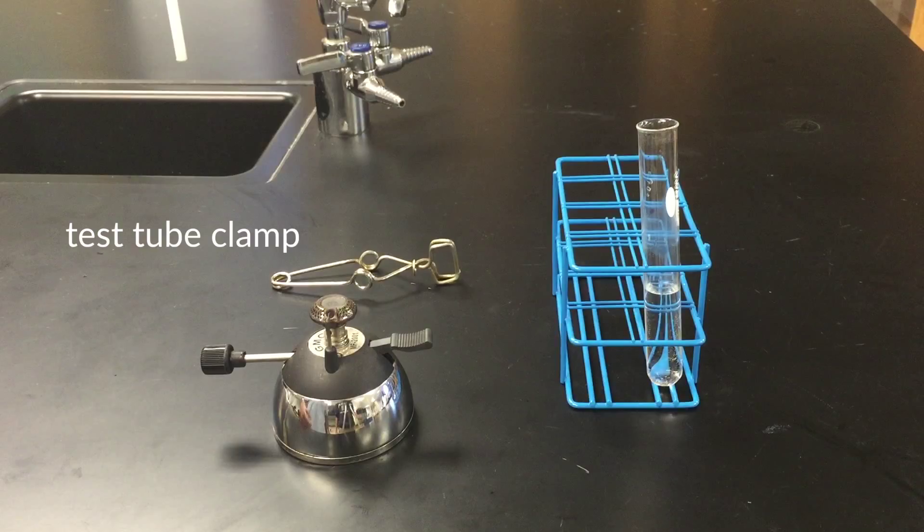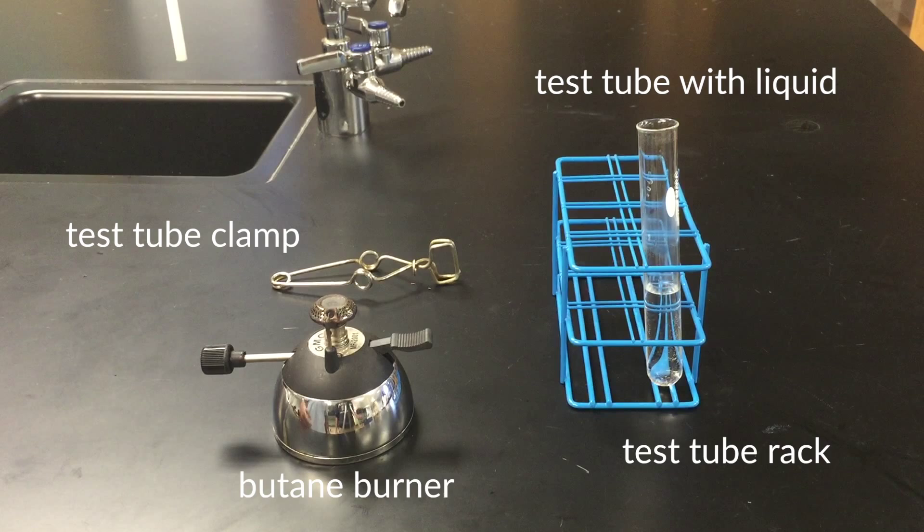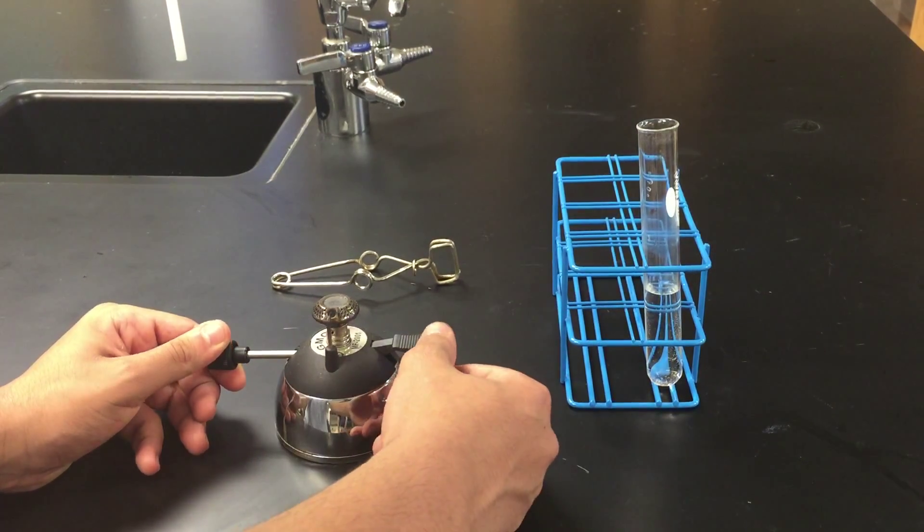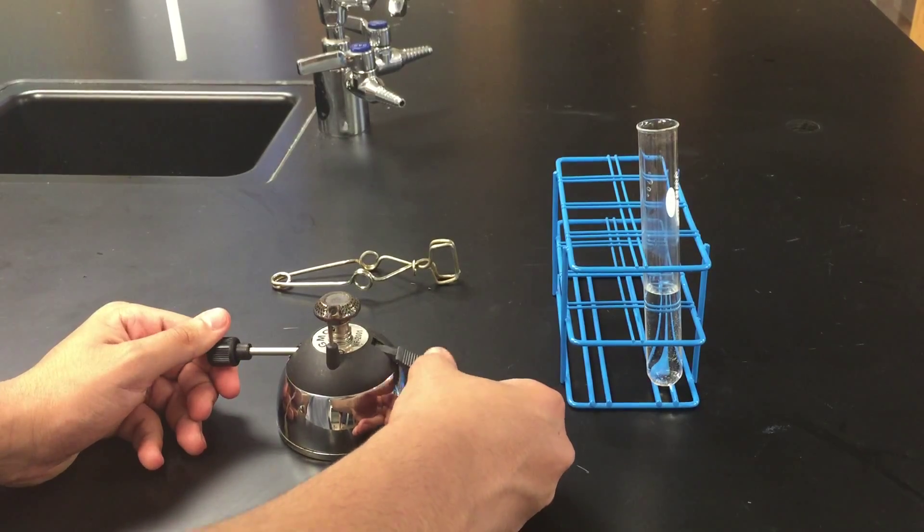To heat a liquid, you need a test tube clamp, a test tube rack, a test tube with liquid in it, and a butane burner. First, turn on the butane burner and lower the heat so it's not too high.